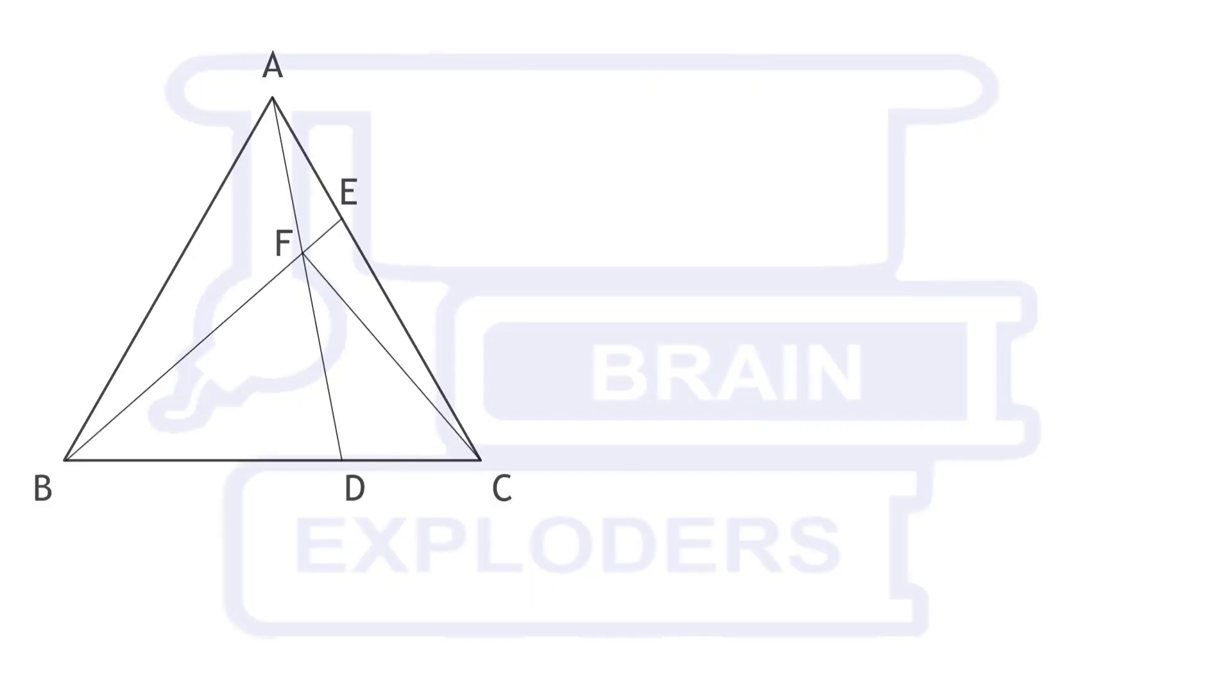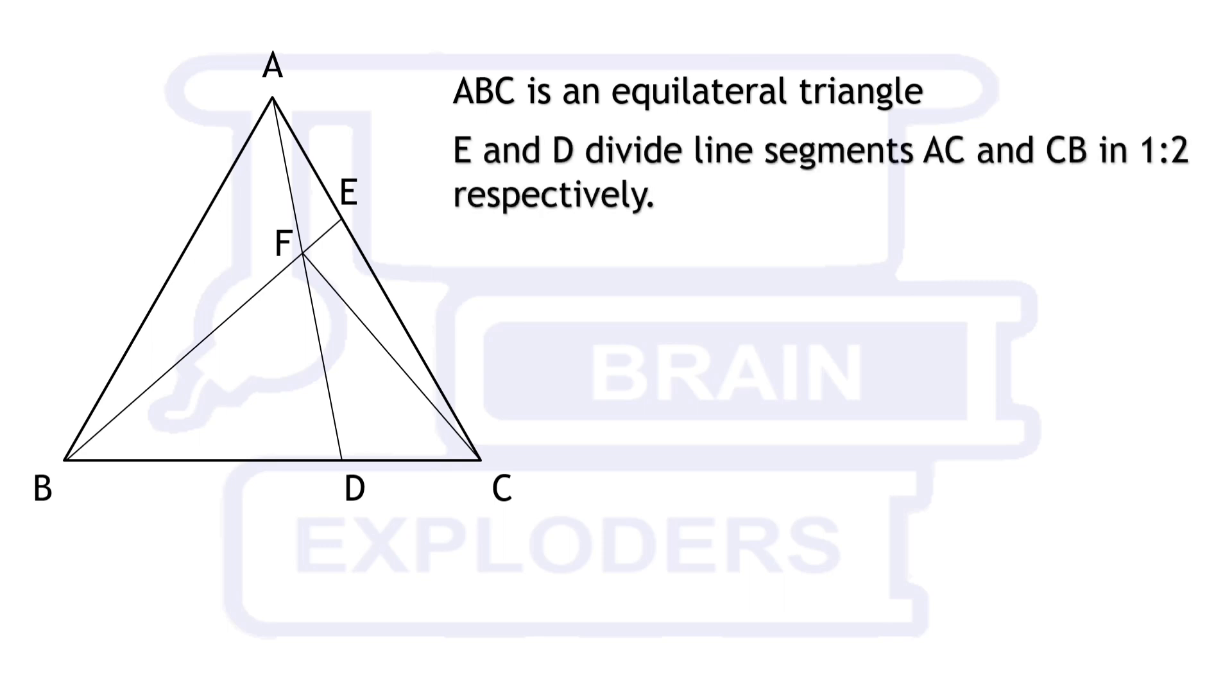ABC is an equilateral triangle. E and D divide line segments AC and CB in 1:2 ratio respectively. Since AC and CB are equal in lengths and both are divided in 1:2 ratio,